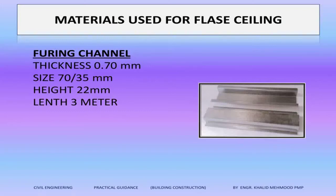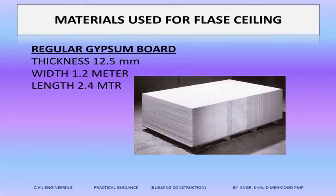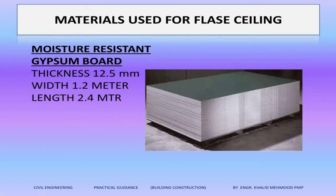The next material is called a furring channel. The furring channel size is 70 by 35 mm and its height is 22 mm. The next material is called a regular gypsum board — this is a gypsum board 12.5 mm. That's why we call it a gypsum board false ceiling, because we use a gypsum board. And this is a moisture-resistant gypsum board.